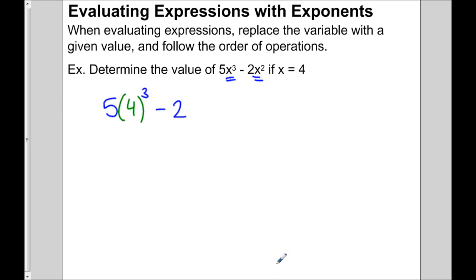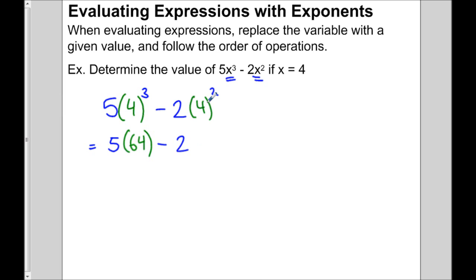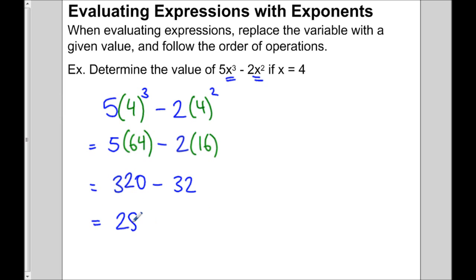Minus 2 — again, instead of writing x we write 4, and that's raised to an exponent. Before we do any multiplying or subtracting, according to order of operations, we deal with the exponents first. So 4 to the 3 is 4 times 4 times 4, which is 64. Subtract 2, and 4 squared is 16. Now 5 times 64 gives us 320, and 2 times 16 is 32. When we subtract those two numbers we get 288. That's how we evaluate an expression.